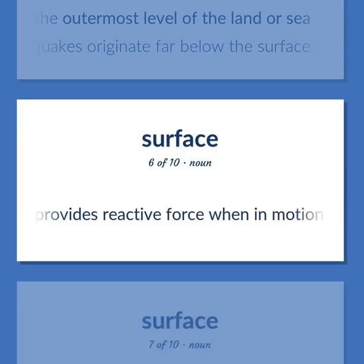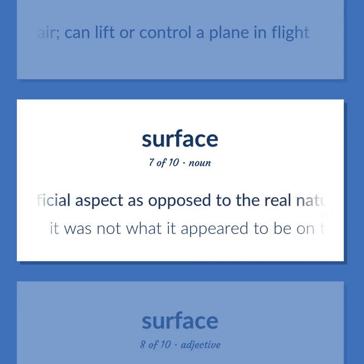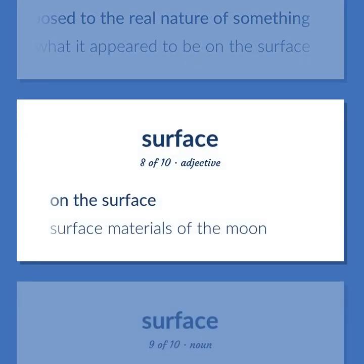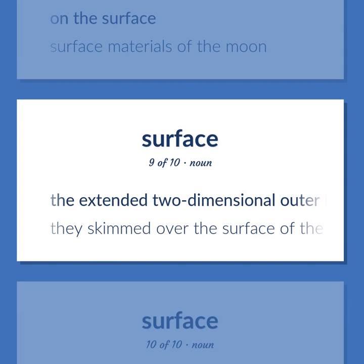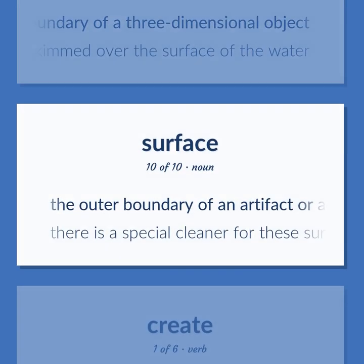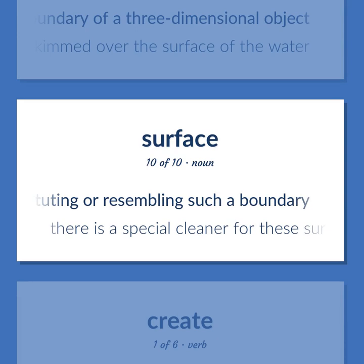A device that provides reactive force when in motion relative to the surrounding air, which can lift or control a plane in flight. A superficial aspect as opposed to the real nature of something. It was not what it appeared to be on the surface. On the surface. Surface materials of the moon. The extended two-dimensional outer boundary of a three-dimensional object. They skimmed over the surface of the water. The outer boundary of an artifact or a material layer constituting or resembling such a boundary. There is a special cleaner for these surfaces.